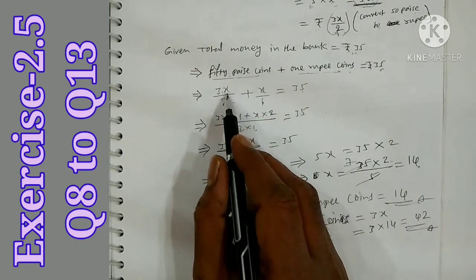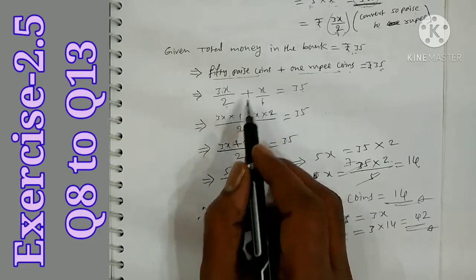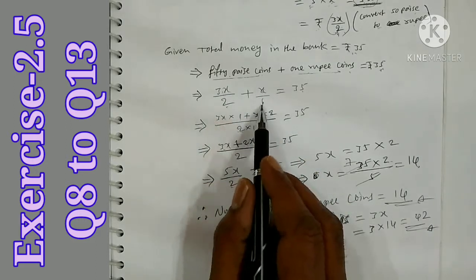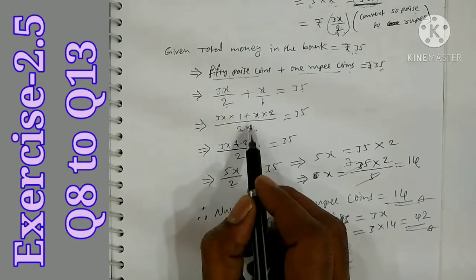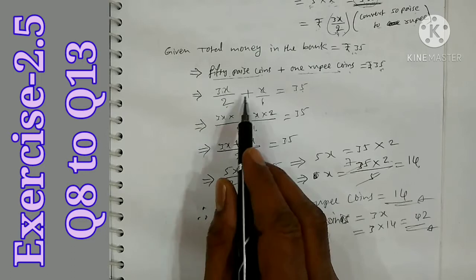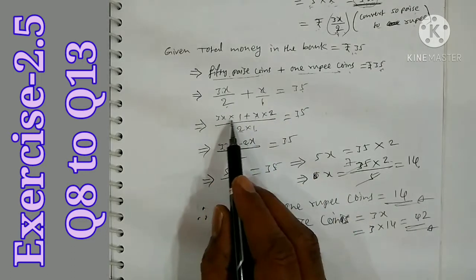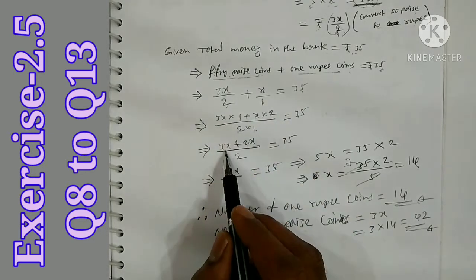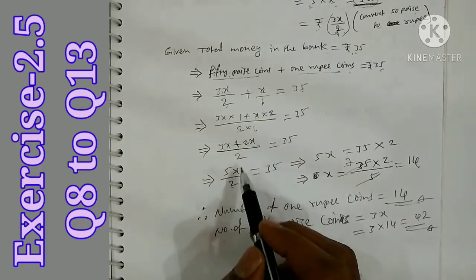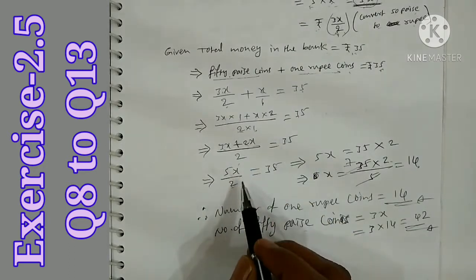Taking the LCM of 2 and 1, which is 2: 1 into 3x gives 3x, and x into 2 gives 2x, all equal to 35. So 3x plus 2x is 5x, over 2, equals 35.